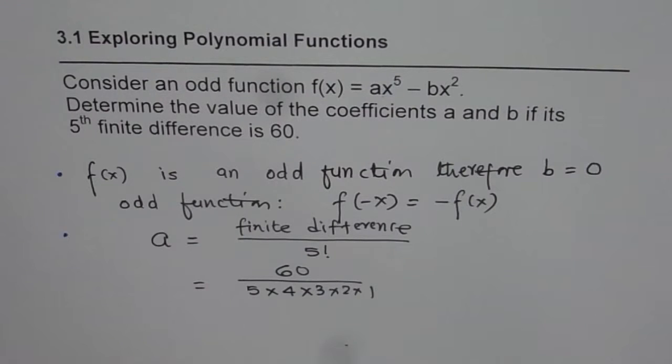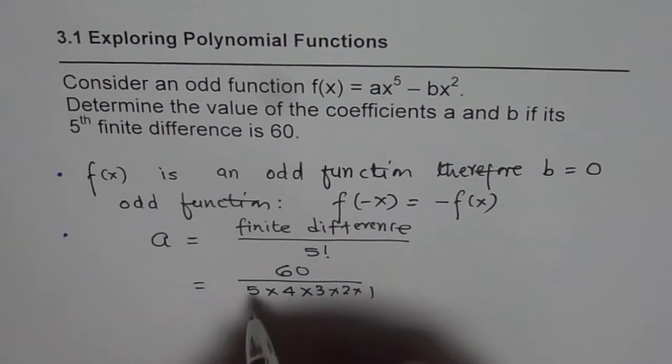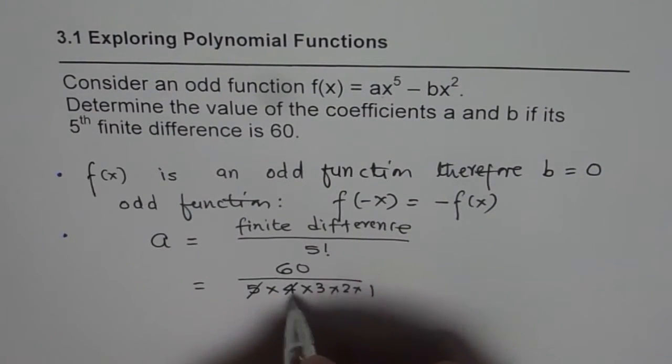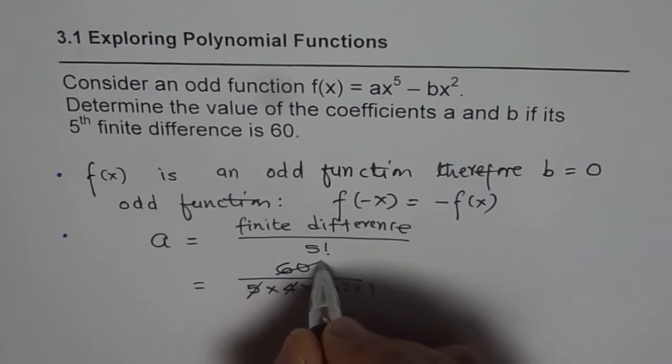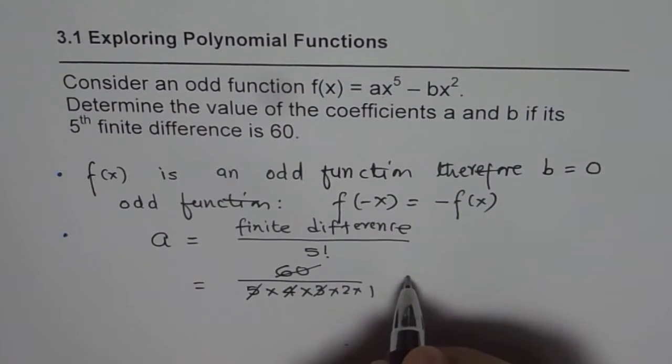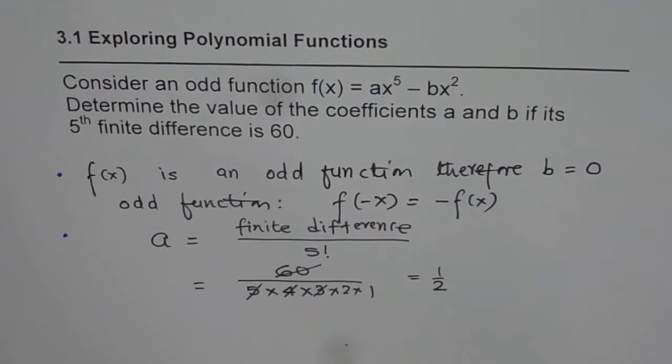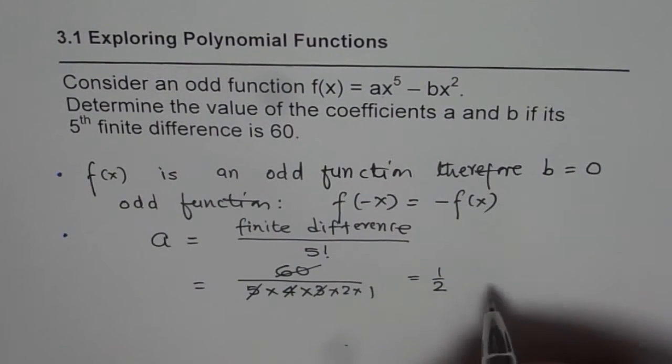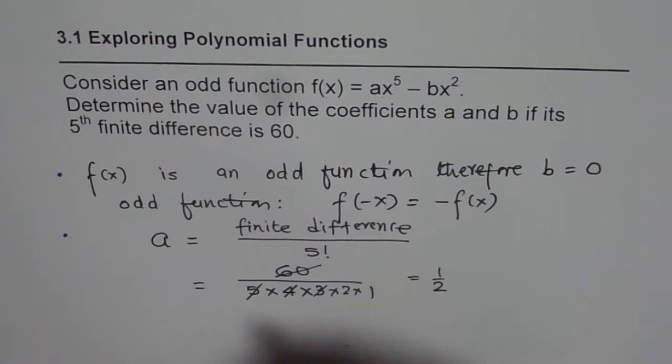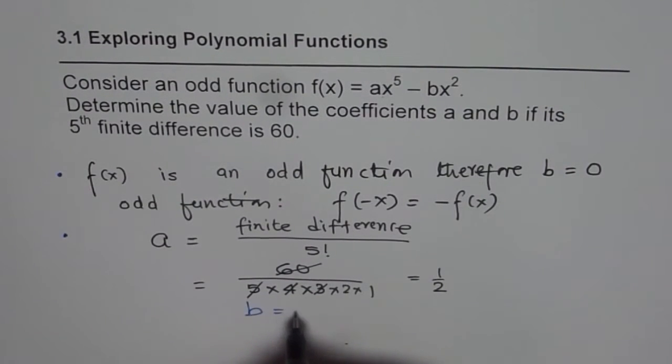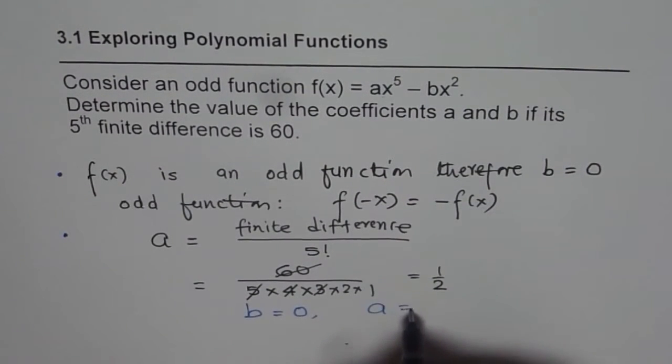5 times 4 is 20, 20 times 3 is 60, so 60 goes. You are left with 1 over 2. Therefore you get the value of a. So we have our answer. The answer is b = 0 and a = 1/2.